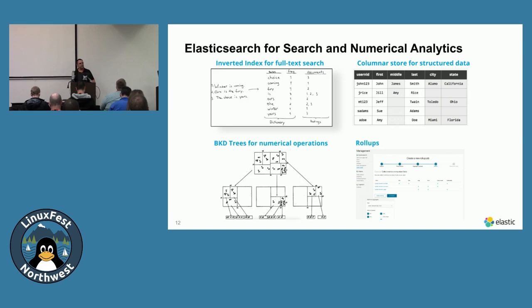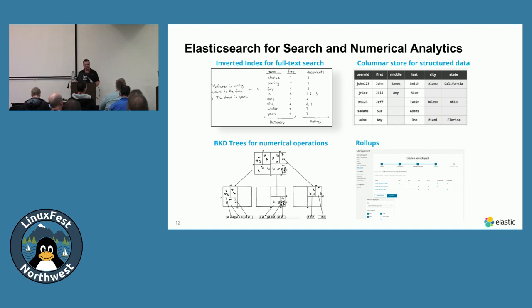Elasticsearch has different indices for different use cases. For regular text search, it uses the inverted index. For numerical data and ranges, depending on whether you're doing aggregations or searching numbers, it will use either BKD indices or columnar store indices — whatever is best for your particular use case.